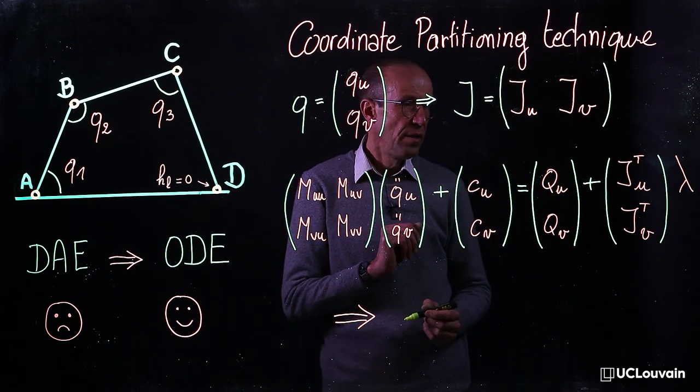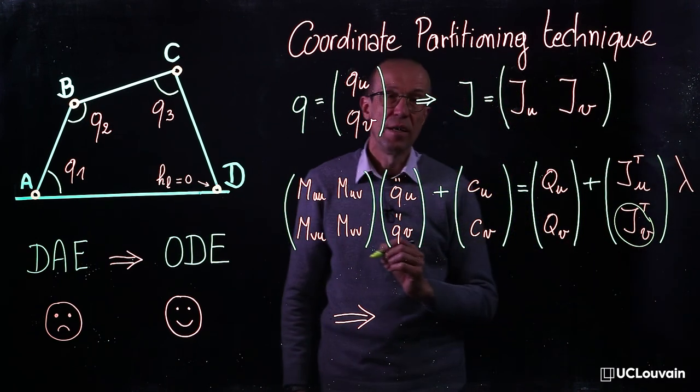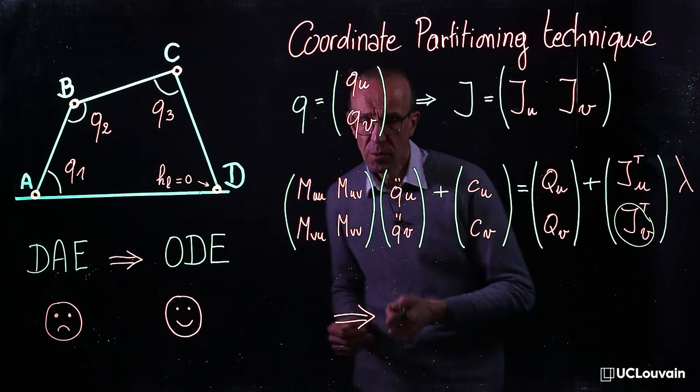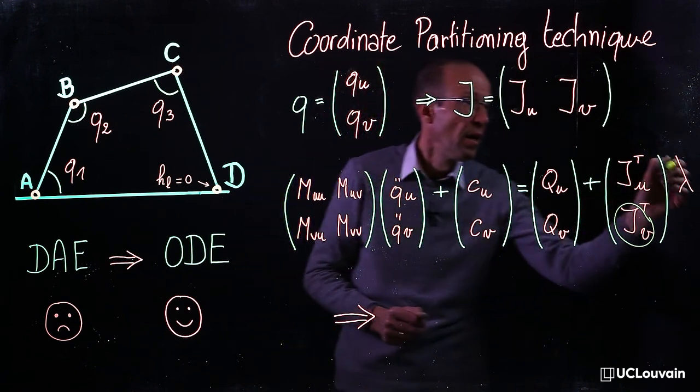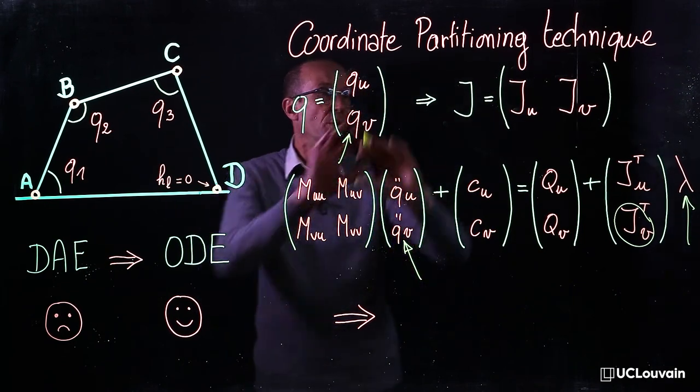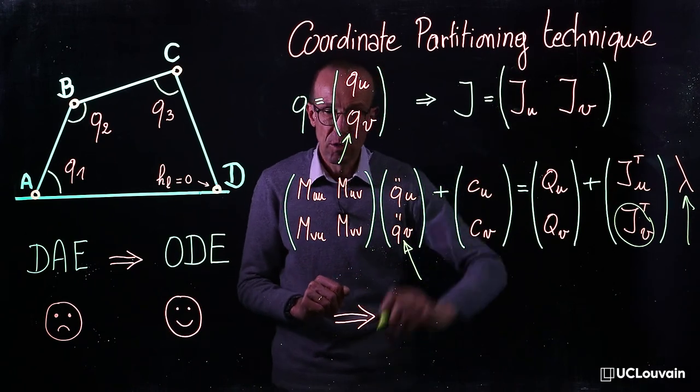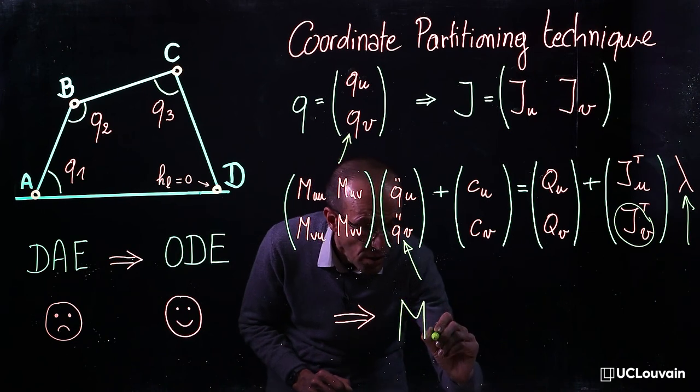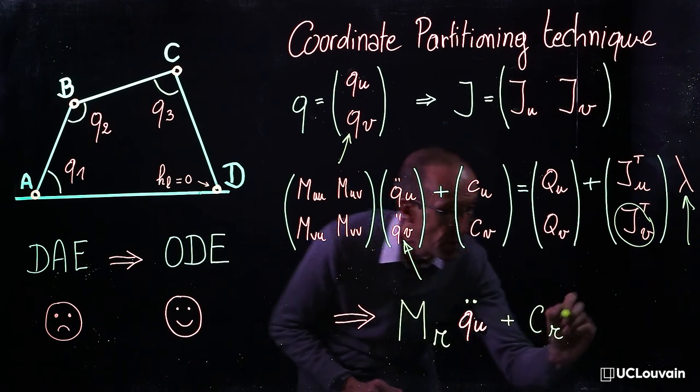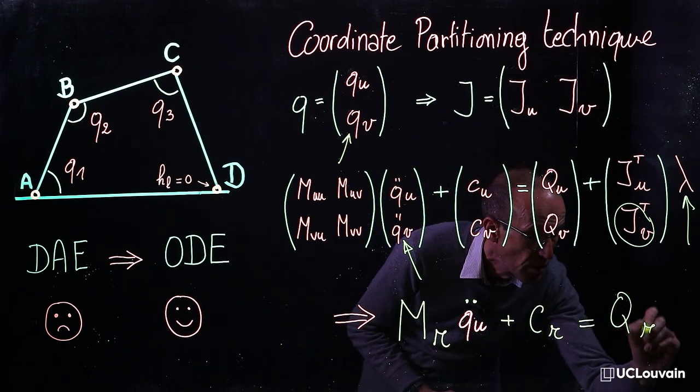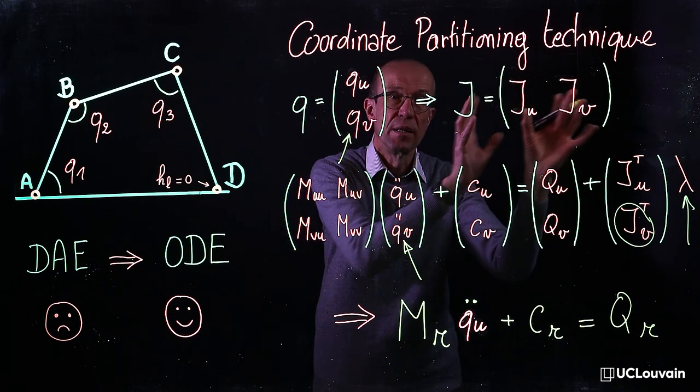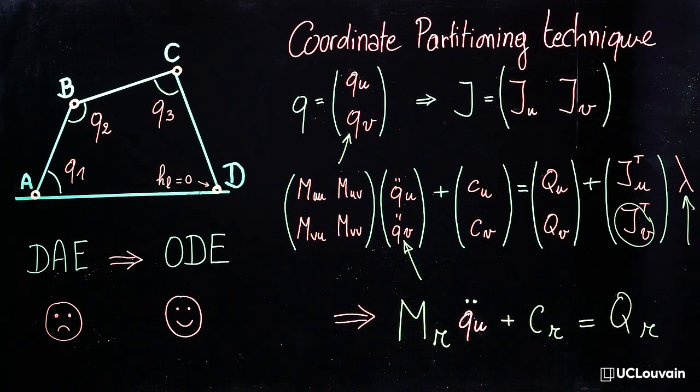Assuming that the matrix Jv is a full-rank square matrix, and after some matrix manipulations, it is possible to eliminate λ and the dependent variables to reduce this set of equations into a set of ordinary differential equations, denoted ODE.